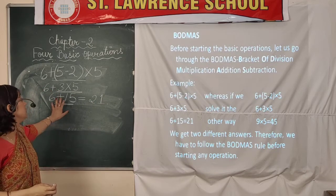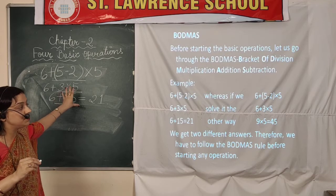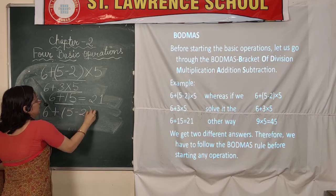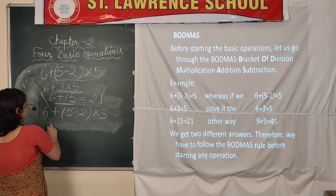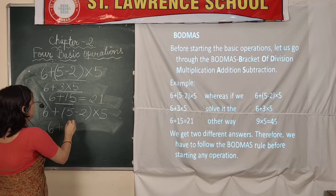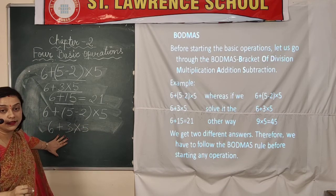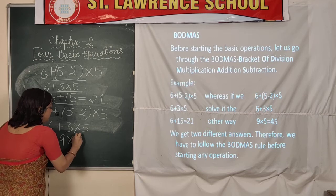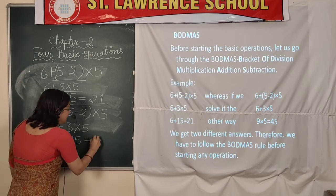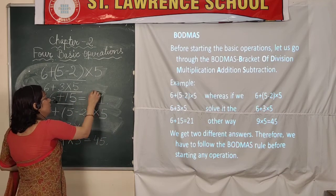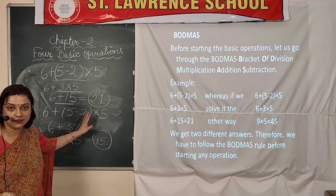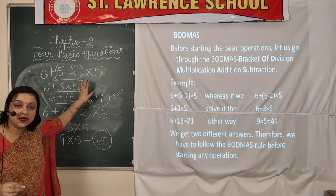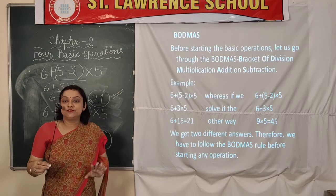Now if we solve it without the BODMAS rule, let us see what happens. If we solve the bracket first and get 3, then straight away write 6 plus 3 equals 9, and then multiply by 5, we get 9 fives which is 45. You can see both answers differ. But which answer is right? The answer 21 is right because we followed the BODMAS rule. Every time we start any operation, we are going to follow this rule, and you will have to learn it by heart.